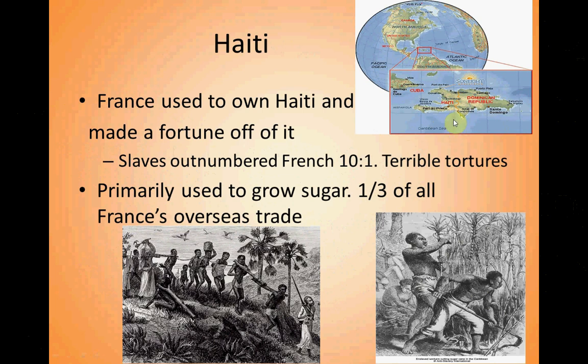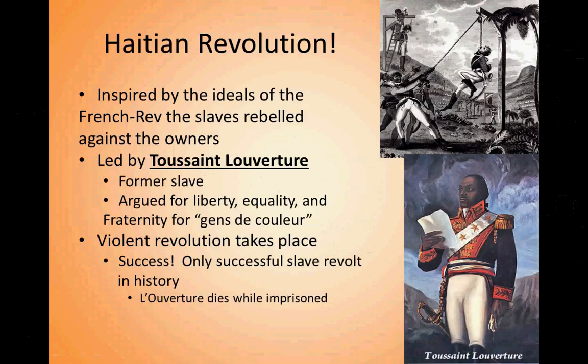Haiti was almost entirely Black African people, but the ruling class was entirely white. Slaves outnumbered the French white people 10 to 1 on average. When you have a huge mismatch where a small minority must control a large majority — whether it's Sparta or U.S. plantation slavery — it often leads to some of the worst abuses in history, because people use fear and pain to control others. Haiti was famous for having horrendous abuses of human life, some of the worst examples from slavery.